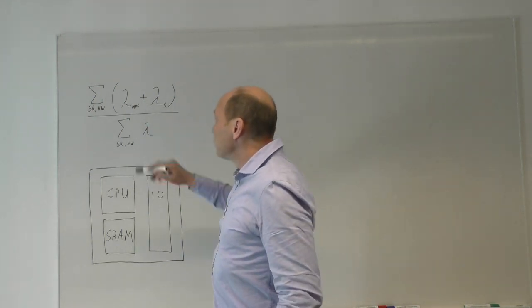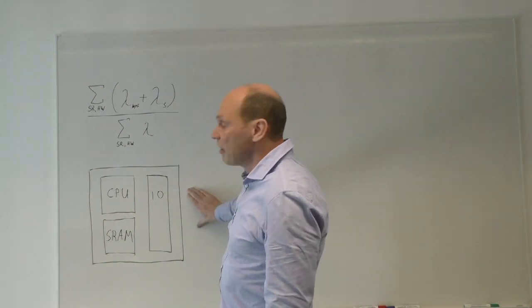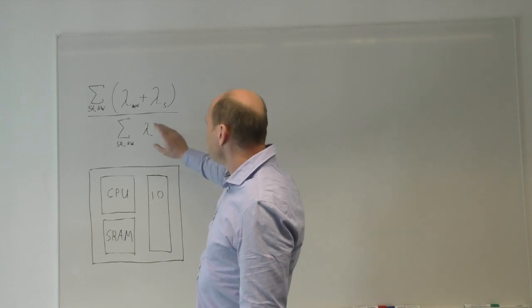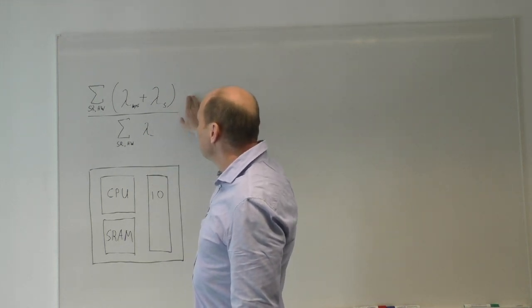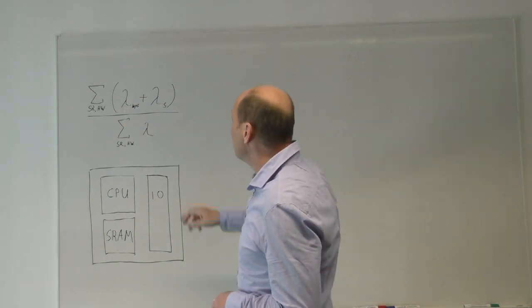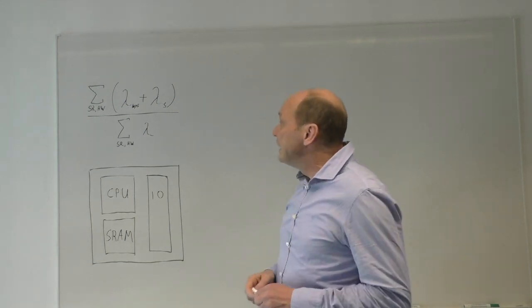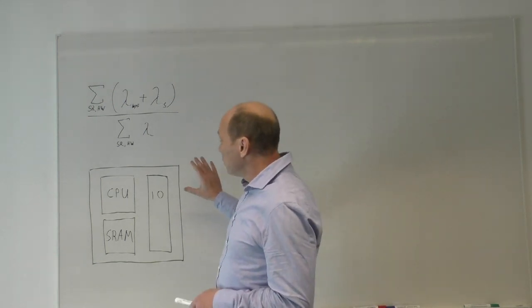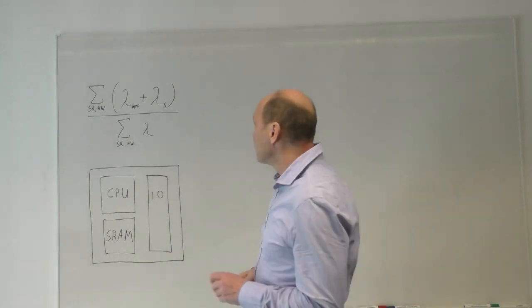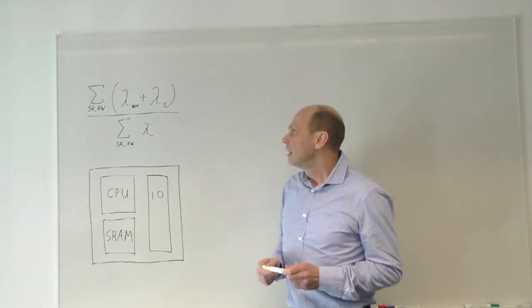We have lambda, which is the failure rate of the device. Down here we have the total lambda of this device - how many times would the device fail in the field due to random error? On top we have lambda for the multi-point faults plus lambda for the safe faults. Multi-point faults are actually related to detected faults. What is a multi-point fault? What happens here?